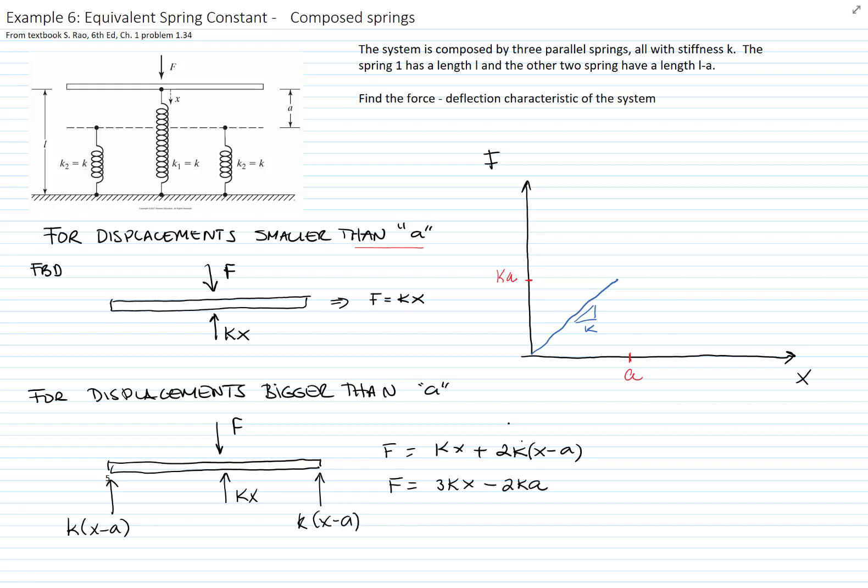So this is a different slope. If we graph our function, this is force equals 3kx minus 2ka.